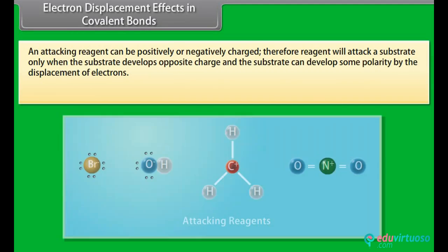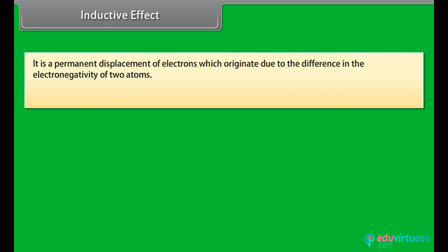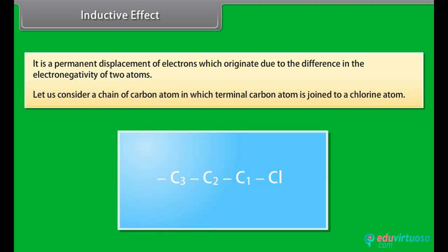An attacking reagent can be positively or negatively charged. Therefore, the reagent will attack a substrate only when the substrate develops an opposite charge, and the substrate can develop some polarity by the displacement of electrons. Such displacement of electrons in the substrate molecule is referred to as electron displacement effects. The inductive effect is a permanent displacement of electrons which originates due to the difference in the electronegativity of two atoms. Consider a chain of carbon atoms in which the terminal carbon atom is joined to a chlorine atom.